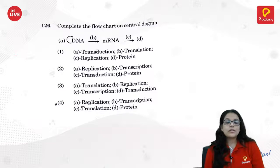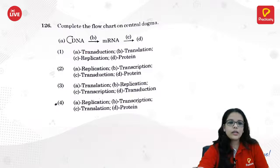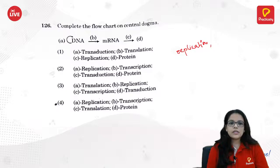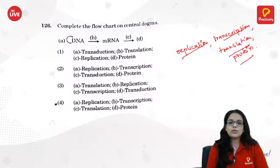This is about the central dogma. DNA replicates itself — that is replication. Then DNA becomes mRNA — that is transcription. After mRNA it is translated — translation into protein. So: replication, transcription, translation, protein. The answer is 4.